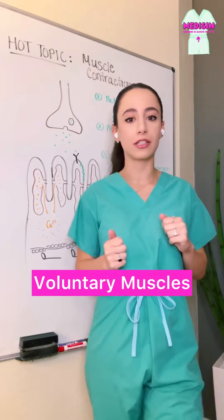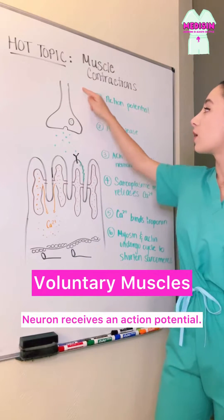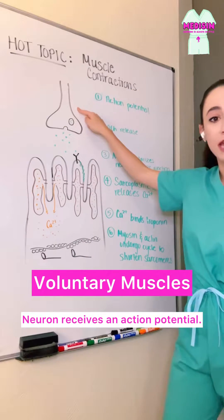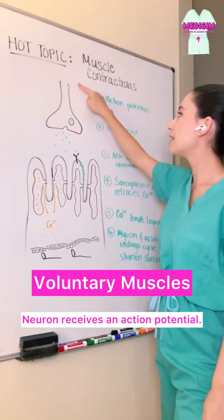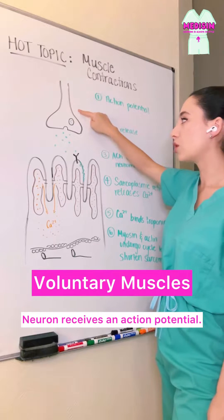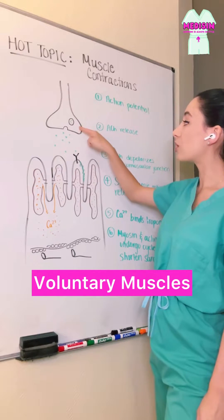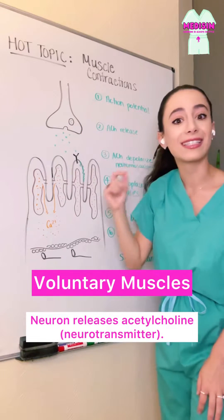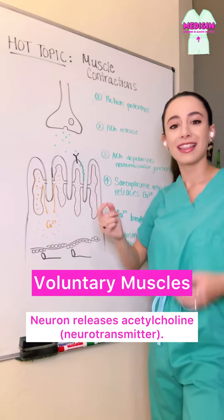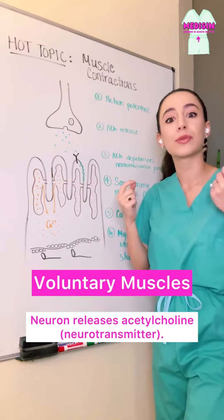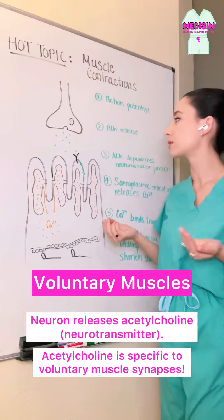So let's talk about our voluntary muscles. It all starts when a neuron receives an action potential from the beginning of its axon, and this action potential goes all the way to the end of the axon terminals, where the neuron is going to release acetylcholine, a neurotransmitter. This neurotransmitter is specific to the muscles that we can choose to move — the voluntary muscles.